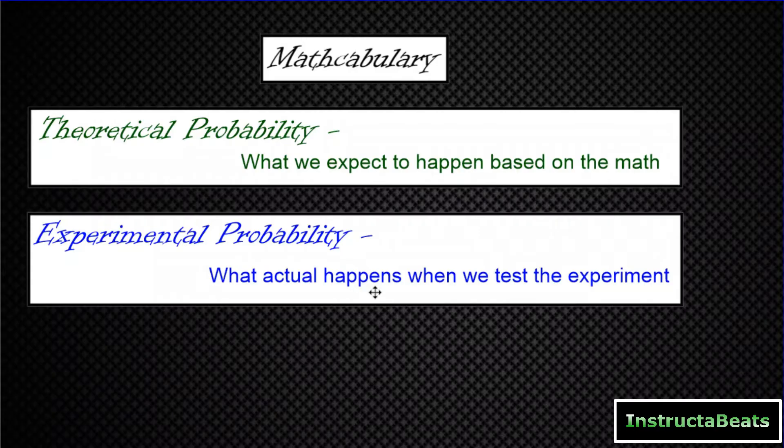So you're predicting with theoretical probability before you start, and then as you start experimenting — flipping that coin, rolling the dice, picking marbles out of the bag, whatever you're doing — you take a look at the results, and that's how you come up with your experimental probability.